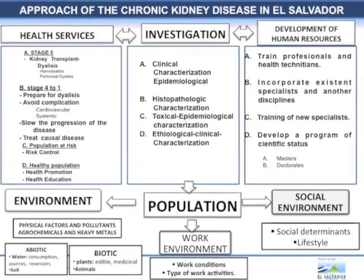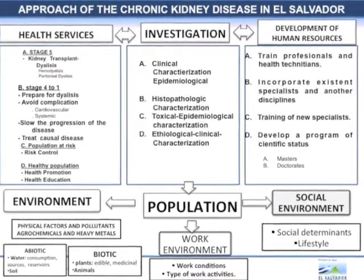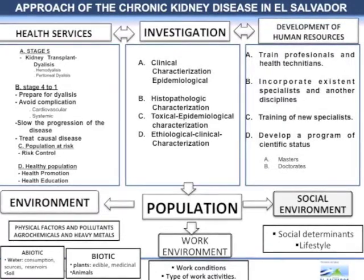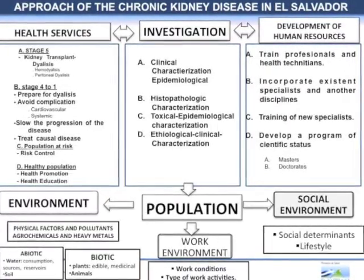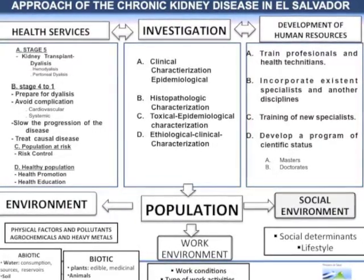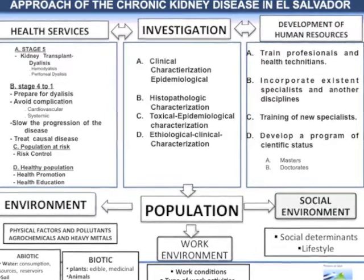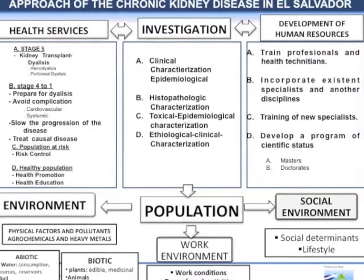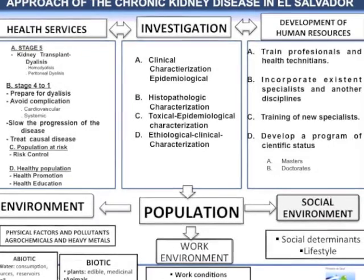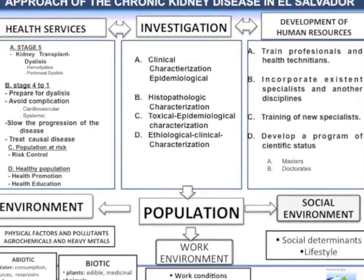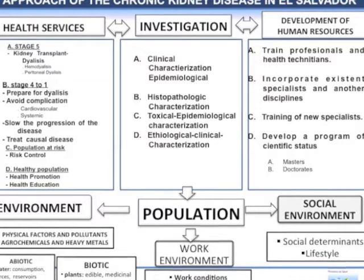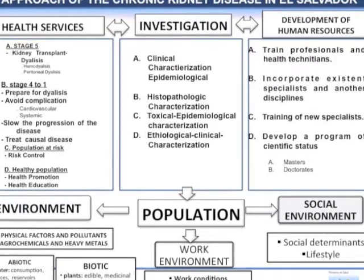Our approach to chronic kidney disease in El Salvador has three components. First, investigation: characterization of CKD through epidemiological, clinical, and toxic-epidemiological study of the physical environment, the working environment, and social determinants. Second, health services: improving health services with a comprehensive and integrated health network based on primary health care. Third, development of human resources: training professionals and health technicians.